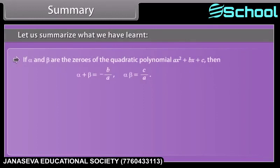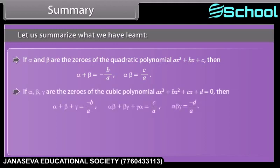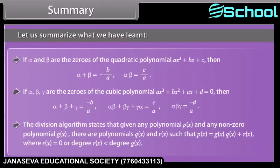If alpha and beta are the zeros of the quadratic polynomial ax squared plus bx plus c, then alpha plus beta equals minus b upon a, and alpha times beta equals c upon a. If alpha, beta, gamma are the zeros of the cubic polynomial ax cubed plus bx squared plus cx plus d equals 0, then alpha plus beta plus gamma equals minus b upon a, alpha times beta plus beta times gamma plus gamma times alpha equals c upon a, and alpha times beta times gamma equals minus d upon a. The division algorithm states that given any polynomial P(x) and any non-zero polynomial G(x), there are polynomials Q(x) and R(x) such that P(x) equals G(x) times Q(x) plus R(x), where R(x) equals 0 or degree of R(x) is smaller than degree of G(x).